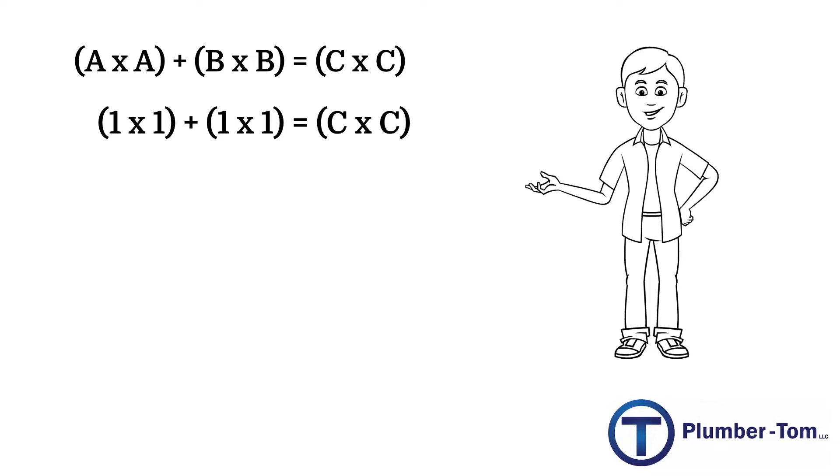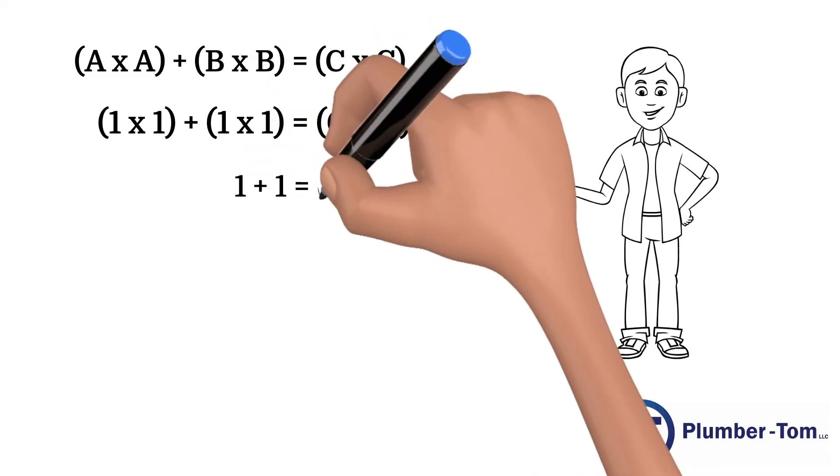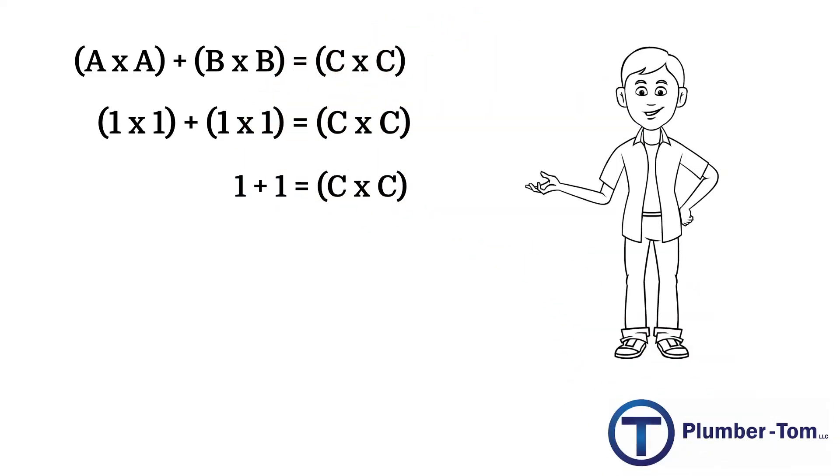Since 1 times 1 is 1, we have 1 plus 1 equals c times c. 1 plus 1 equals 2, so 2 equals c times c. To find c we take the square root of 2.